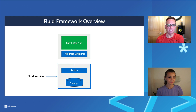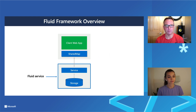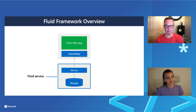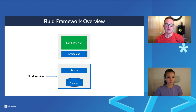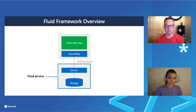How does the Fluid Framework work in real-time collaboration? In the diagram, there are Fluid Data Structures. Once you've set up a service, you write code to use these — for example, there's one called a Shared Map, identical to the JavaScript Map with key-value pairs. But instead of a regular map, in Fluid we have a Shared Map — 'Shared' meaning it can be shared across multiple collaborators.